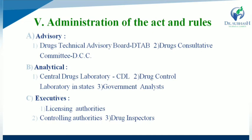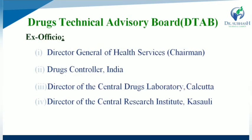Next, administration of the Act and rules. The advisory committee has two subtypes: Drug Technical Advisory Board (DTAB) and Drug Consultative Committee (DCC). The analytical committee has three types: Central Drug Laboratory, Drug Control Laboratory in any state, and Government Analyst. The executive committee includes licensing authorities, controlling authorities, and the Drug Inspector.